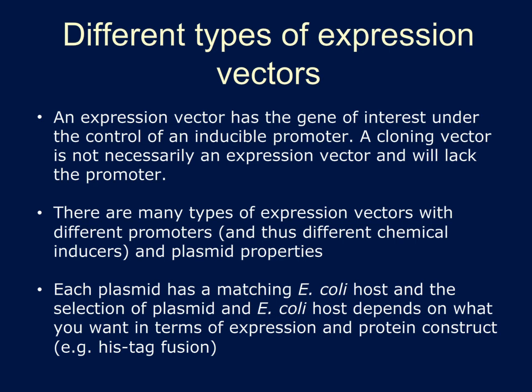There are different types of expression vectors. Remember the difference between an expression vector and a cloning vector: cloning vectors lack the inducible expression element. Expression vectors differ in their promoters and many different plasmid properties. Those that have different promoters have different chemical inducers. For example, we talked about IPTG, but in lab you'll be using arabinose — be sure that you know the difference and why you're using arabinose. Each plasmid has a matching E. coli host, and you need to make sure the properties of your plasmid and host are compatible. There are also different plasmids based on different constructs, such as the HIS tag, GST fusions, and many other types of fusions.